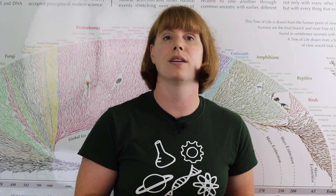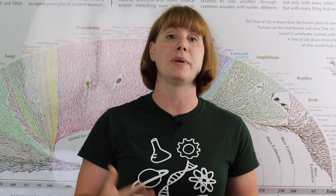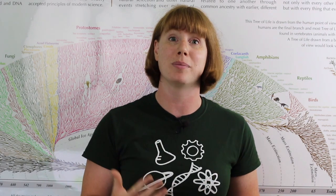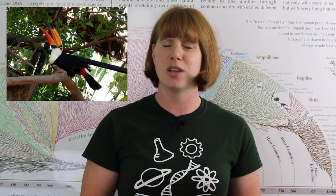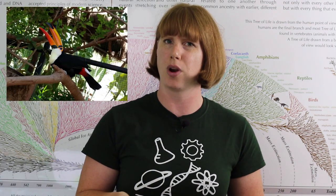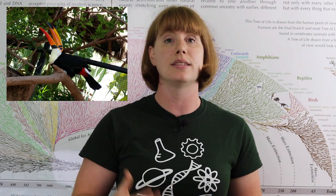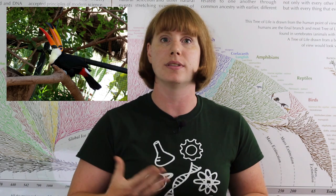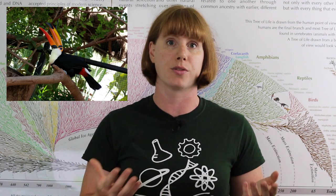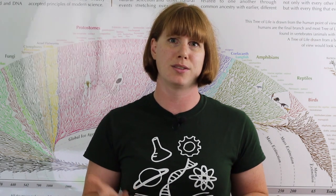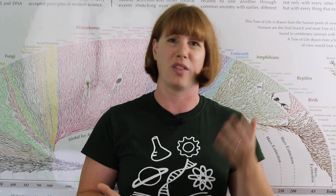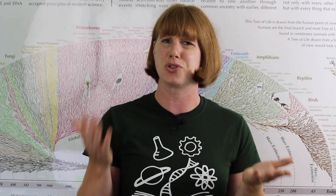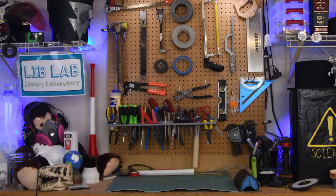It turns out that a toucan's beak is incredibly light, but at the same time it's really strong, so the toucan is able to crack open seeds and other food bits. So how is a toucan's beak both light and strong at the same time?